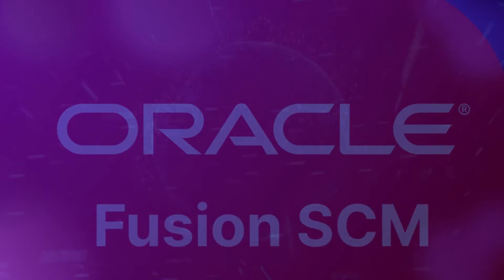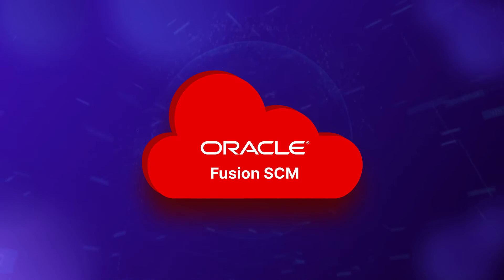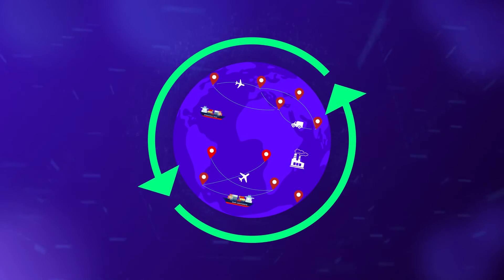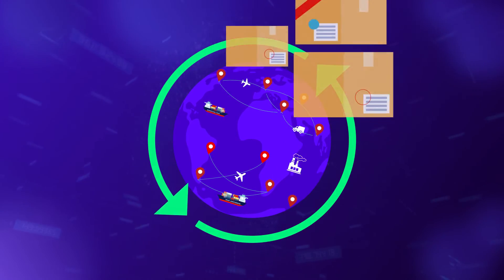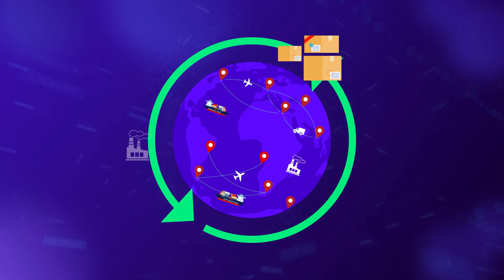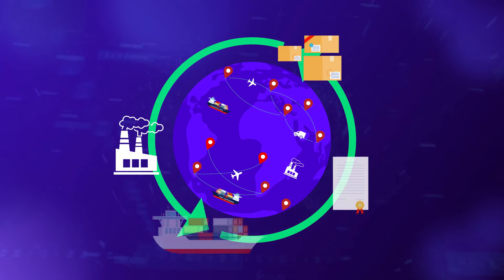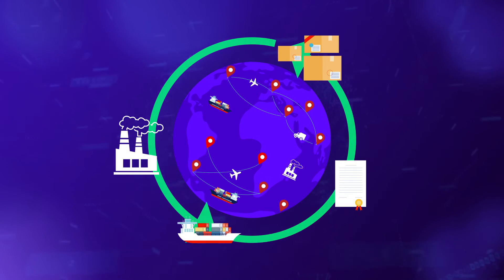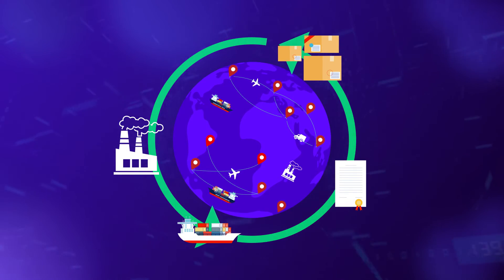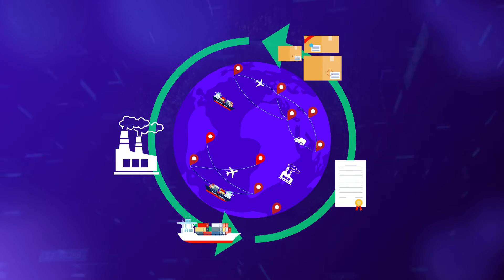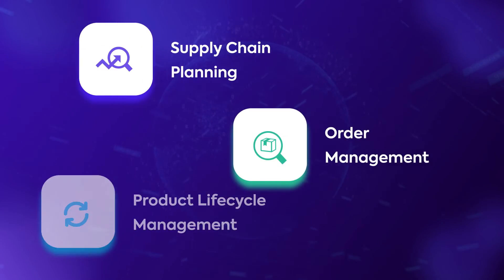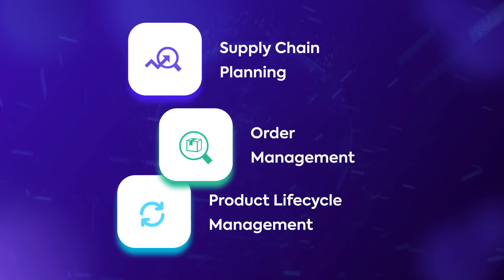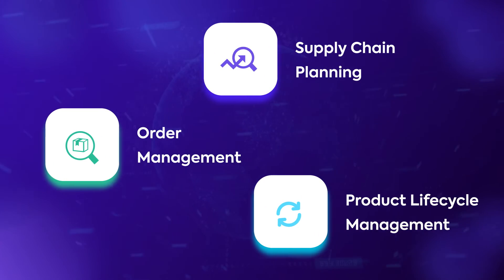Oracle Fusion SCM manages end-to-end supply chain processes, encompassing procurement, manufacturing, inventory, and logistics. Modules within SCM include supply chain planning, order management, and product lifecycle management.